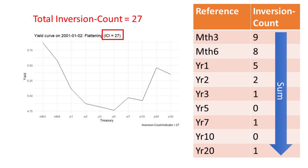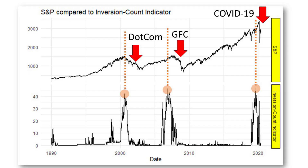So back to our example. On this particular day in 2001, the Inversion Count Indicator gave us a score of 27. There are 27 different points on the yield curve where there were inversions. But what does a score of 27 mean? What should we benchmark 27 against? Let's look at all the Inversion Count Indicator scores from 1992 all the way up to 2020. Two things immediately jump out at you here. First, the ICI peaks.